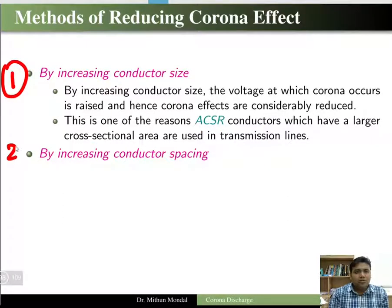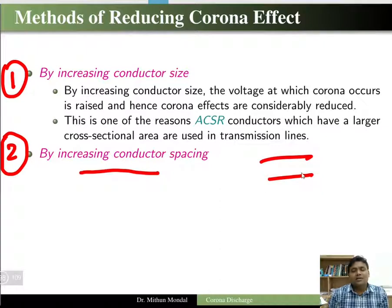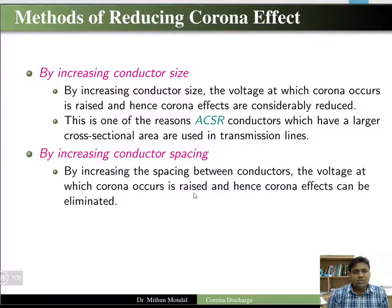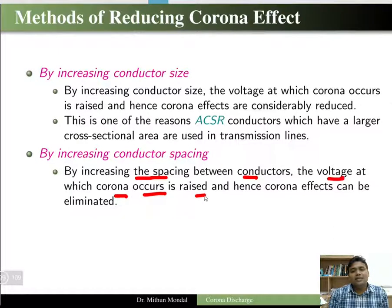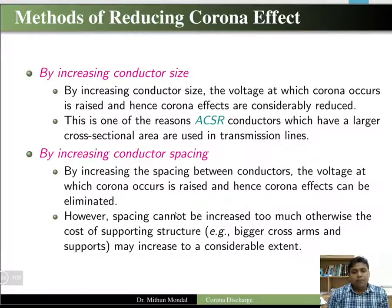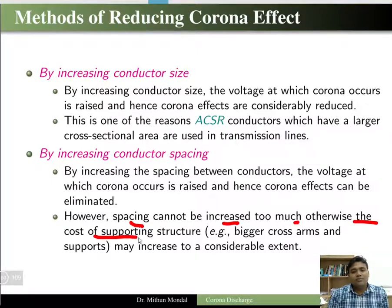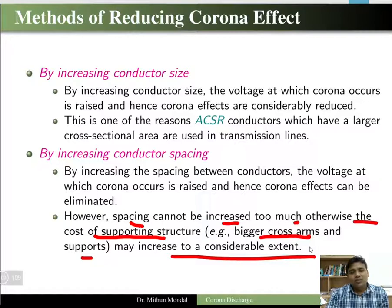The second method is increasing the conductor spacing. Less spacing between conductors produces more corona, while more spacing produces less. By increasing the spacing between conductors, the voltage at which corona occurs is raised and the corona effect can be eliminated. However, spacing cannot be increased too much, as the cost of supporting structures, larger cross arms, and other supports may increase considerably.